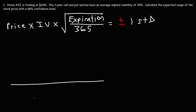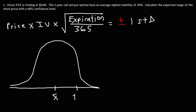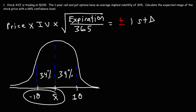Let's review some things from statistics. Assuming a standard normal distribution, in the middle we have the mean, and then one standard deviation to the right and one standard deviation to the left. There is a 34% chance the stock will be between the mean and plus one standard deviation, and a 34% chance it will be between the mean and negative one standard deviation. So there's a 68% chance the stock will be within plus or minus one standard deviation from the mean — and we're going to calculate price movement with that 68% confidence level.